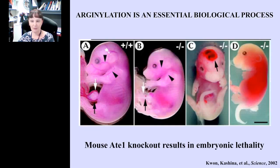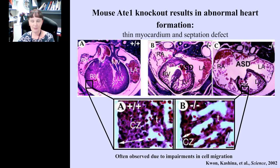ATE1 is clearly very essential. Looking at these embryos in more detail, you can see several major systems affected by the loss of arginylation. This picture shows cross-sections of embryonic hearts. In panel A is the wild-type heart, with a very thick myocardium and well-developed four-chamber structure. In the knockout panels B and C, the myocardium is much thinner and the septa between atria and ventricles are incomplete — essentially a two-chamber heart that's not fully separated. Enlarged areas of the myocardium show that the knockout heart wall has fewer cells.